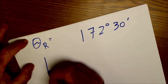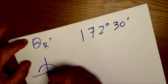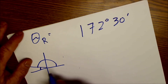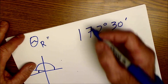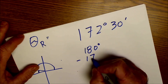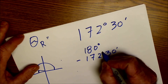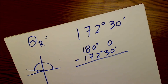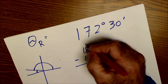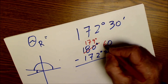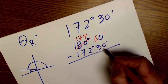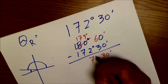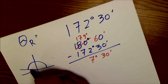That angle is in the second quadrant. The way I would find the reference angle — the positive acute angle to the x-axis — is to subtract that from 180 degrees. So I go 180 degrees minus 172 degrees 30 minutes. I have 0 minus 30, and I can't do that, so I borrow one degree to get 179 degrees 60 minutes. Now 60 minutes minus 30 minutes is 30 minutes, and 179 minus 172 is 7 degrees. So the reference angle is 7 degrees 30 minutes.